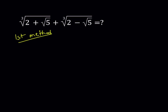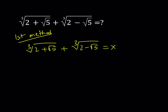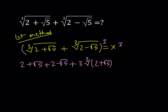My first method involves calling this whole thing x and cubing both sides. When I cube both sides, I would like to use an identity: (a + b)³ can be written as a³ + b³ + 3ab(a + b), which is equal to x. So I cube both sides and then root 5 cancels out.